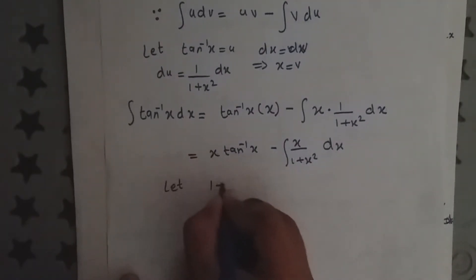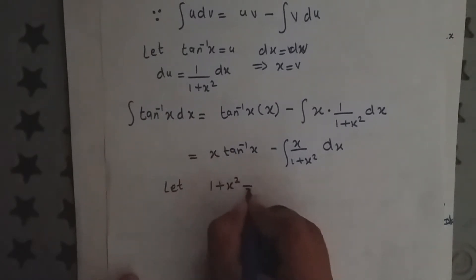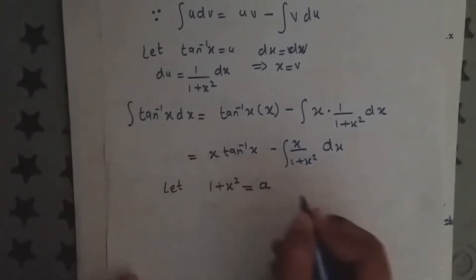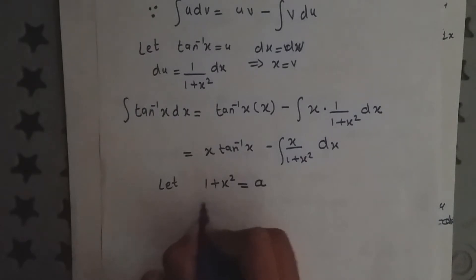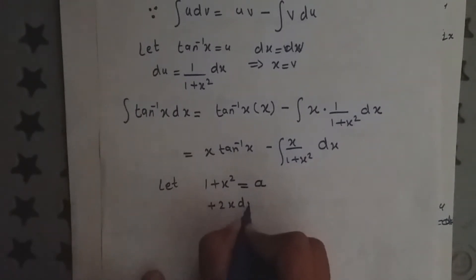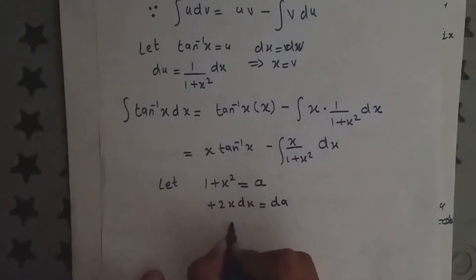Let 1 plus x square equal a. So 2x dx equals dA, and x dx equals dA by 2.